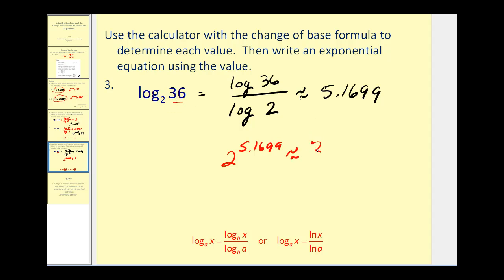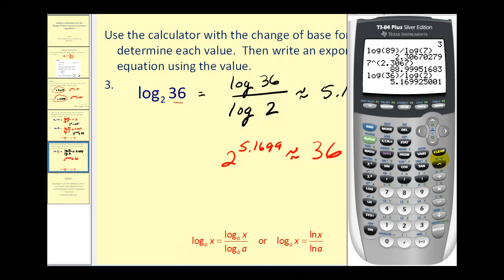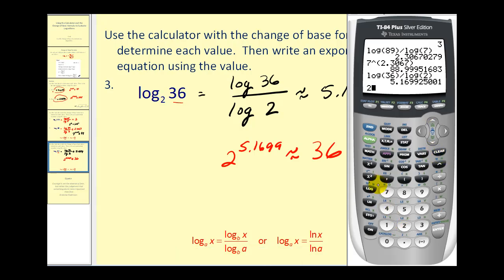Which tells us if we take base 2 and raise it to the power of 5.1699 should equal approximately 36. And let's go ahead and verify that one as well. 2 to the power 5.1699. And you can see it is approximately 36.